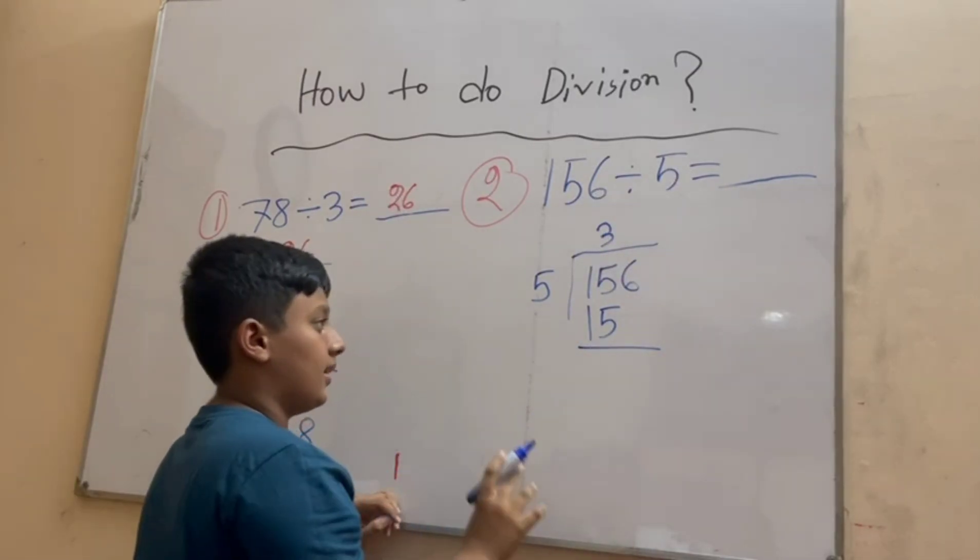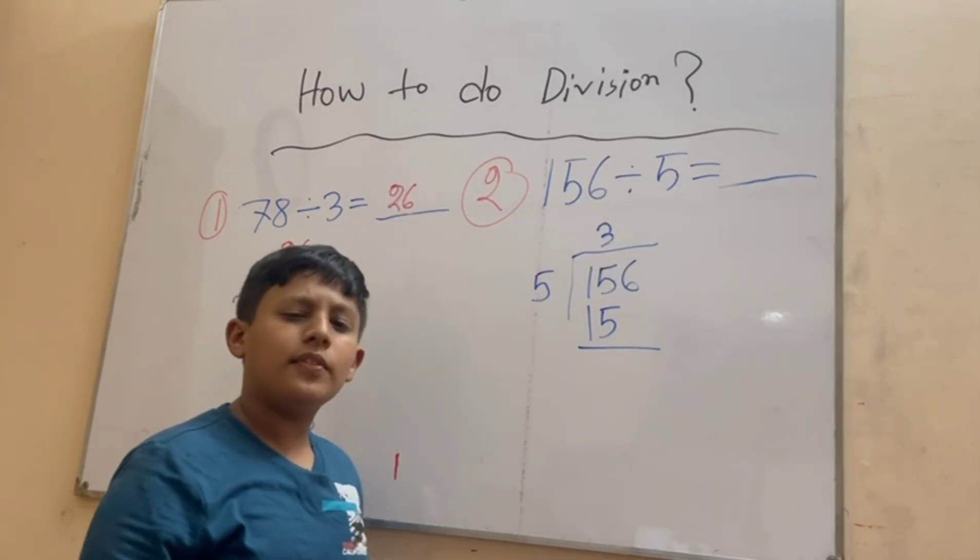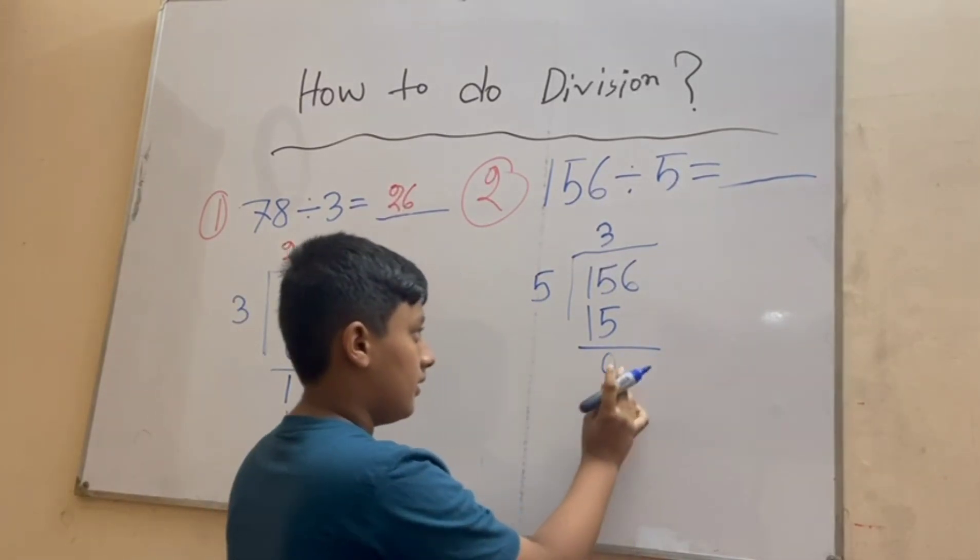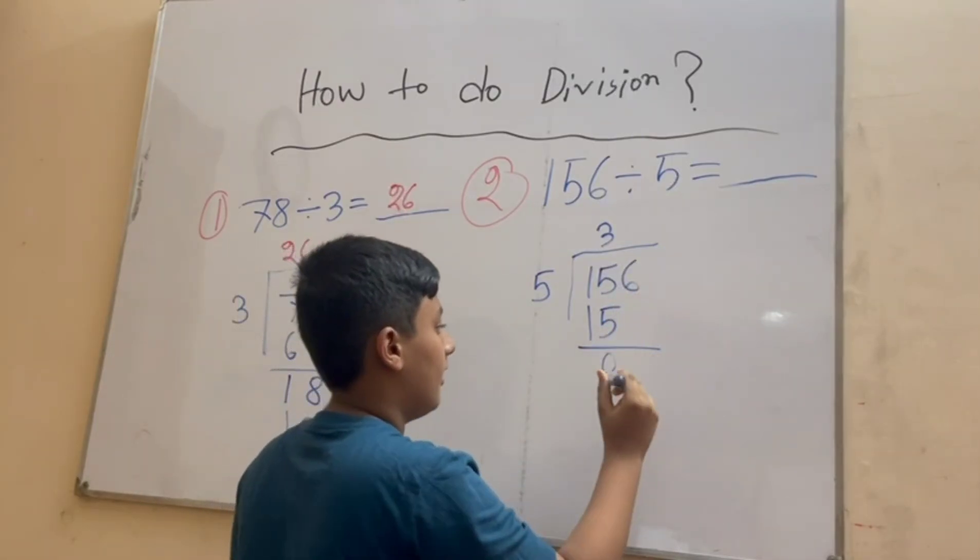And here also we have to do subtraction: 15 minus 15 is equal to zero. And again we have to bring six down.